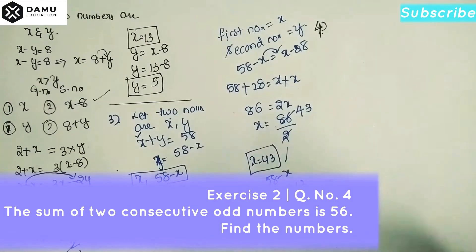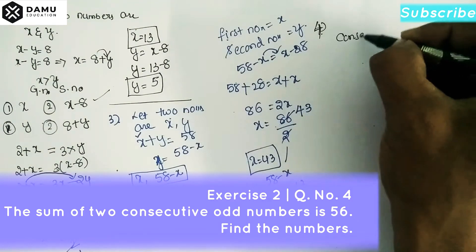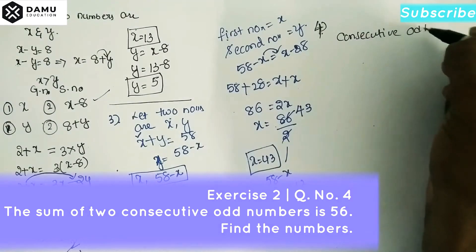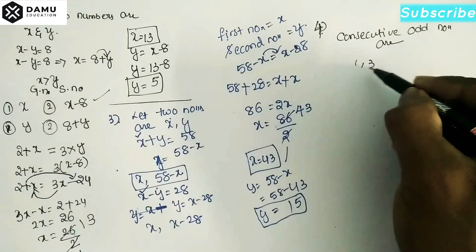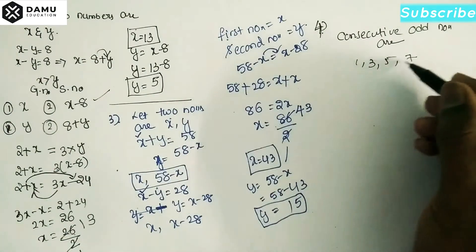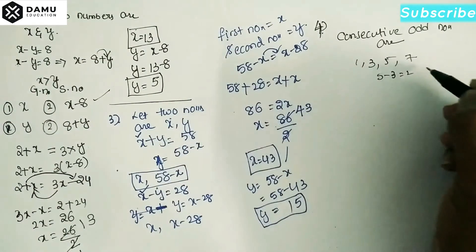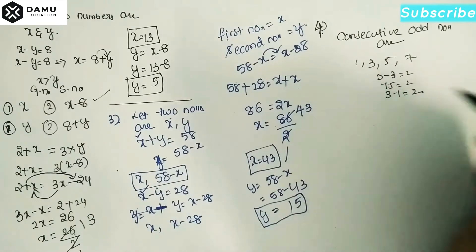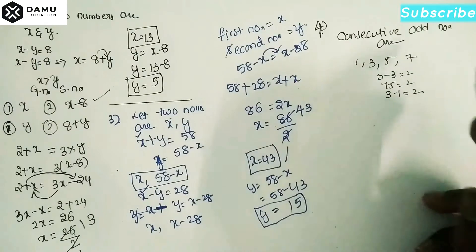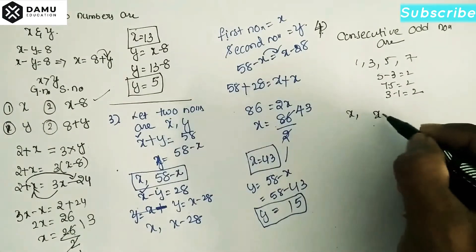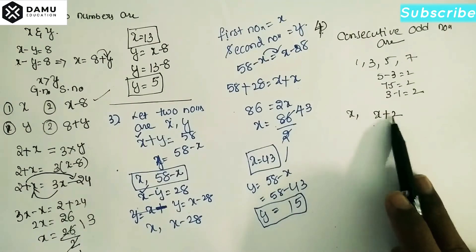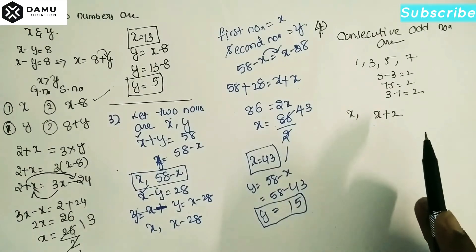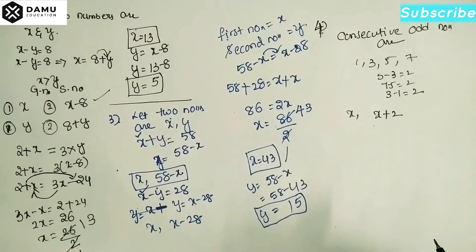Let's take two consecutive odd numbers. Consecutive odd numbers are like 1, 3, 5, 7 — the difference between each is 2. So we are just adding 2 to get the next value. Let's take x and x plus 2 as the two consecutive odd numbers.